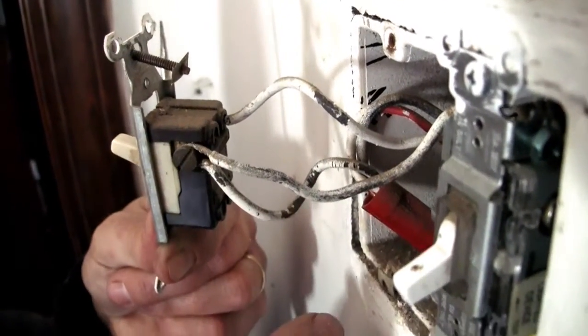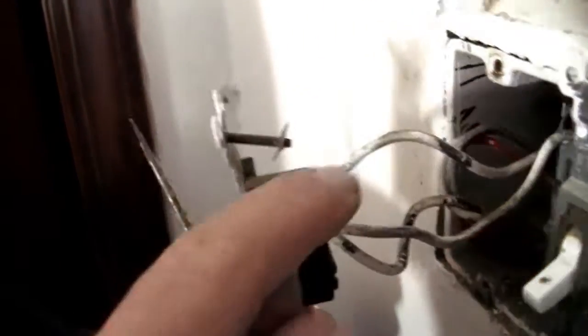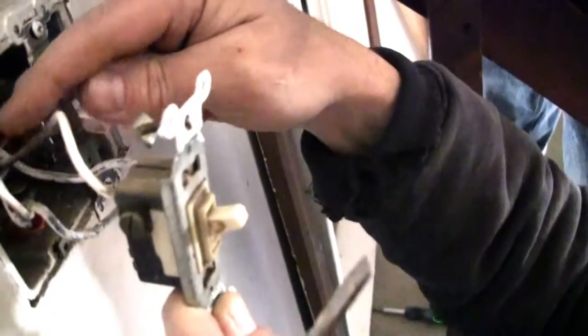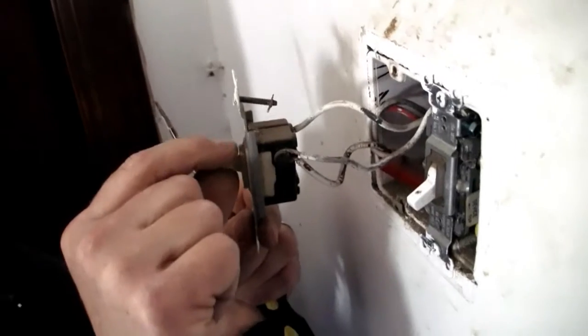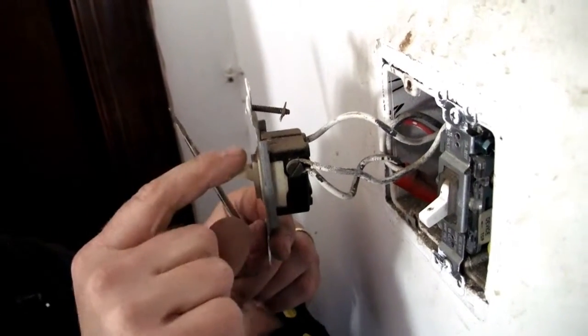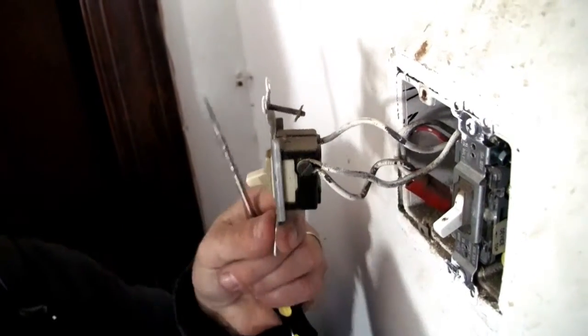Power is coming in through one wire and then it's going through the switch and out to the light. It travels through this other wire and the switch either allows the power to go through when it's on or it turns the power off when it's down. So it's like an interrupter of the power and that's how the switch works.